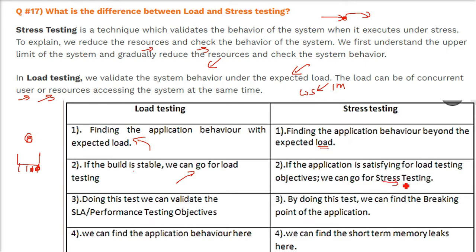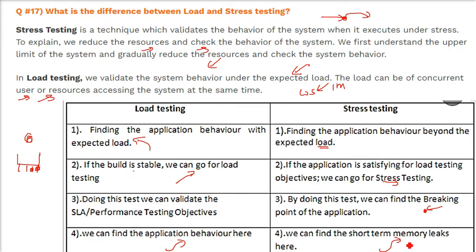By doing load testing we can validate the performance testing objectives. By doing stress testing we can find the breaking point of the application — where it actually breaks, just like the chair analogy where we break the legs to find at what point the chair is going to fall. So in load testing we know the expected load and test with it; in stress testing we exceed the load to see where the system or software breaks down. Most websites use stress testing to find that limit.